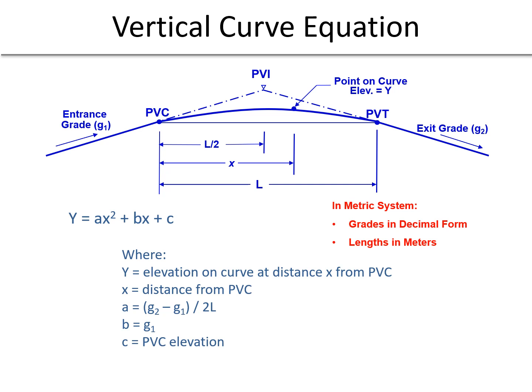As we start to modify the parabolic equation for our particular vertical curve, we again need to remember that in the metric system, grades are going to be in decimal form. So, G1 and G2 will be in decimal form, and lengths will be in meters. So, we are going to turn y equals ax squared plus bx plus c into a specific equation for our particular curve. Again, where the y is the elevation on the curve at a distance x from the PVC, x is the horizontal distance along that stationing axis from the PVC, a is G2 minus G1 divided by 2 times L, b is G1, and c is the PVC elevation.